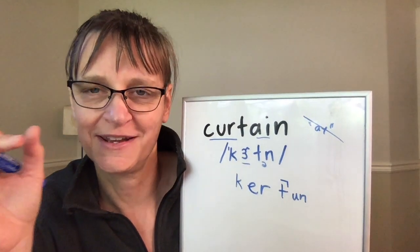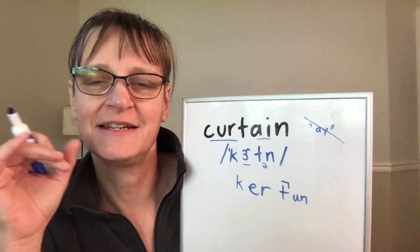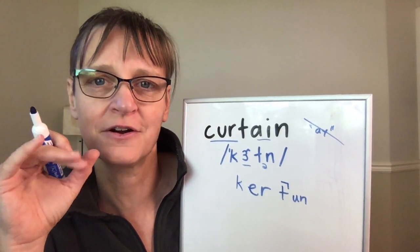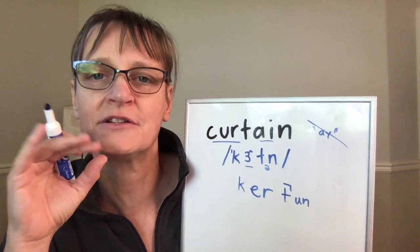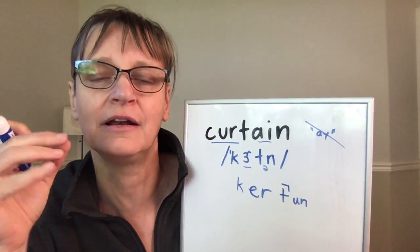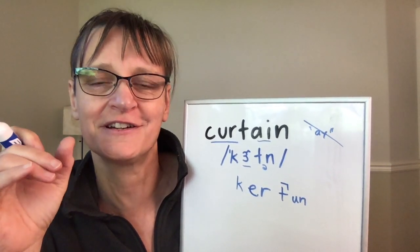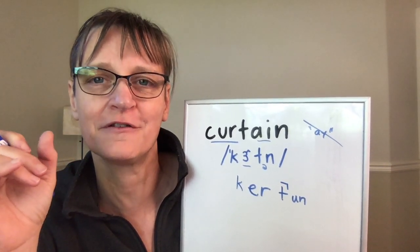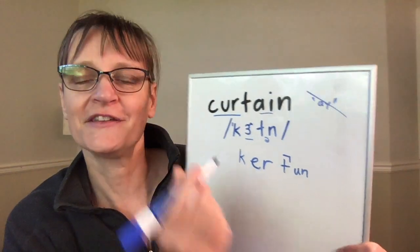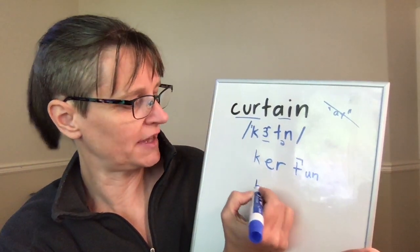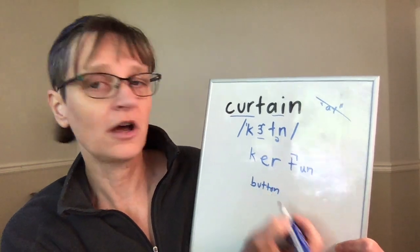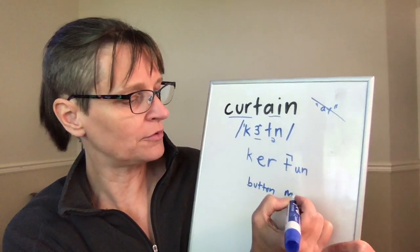The easiest way to get that stop T is to feel it by making the T with your tongue. 'Curt' — just stop the air and don't release the T. 'Curt.' And then you lift the tongue the rest of the way for the N sound. Other words that have this stop T plus N are words like 'button,' 'cotton,' 'mountain.'